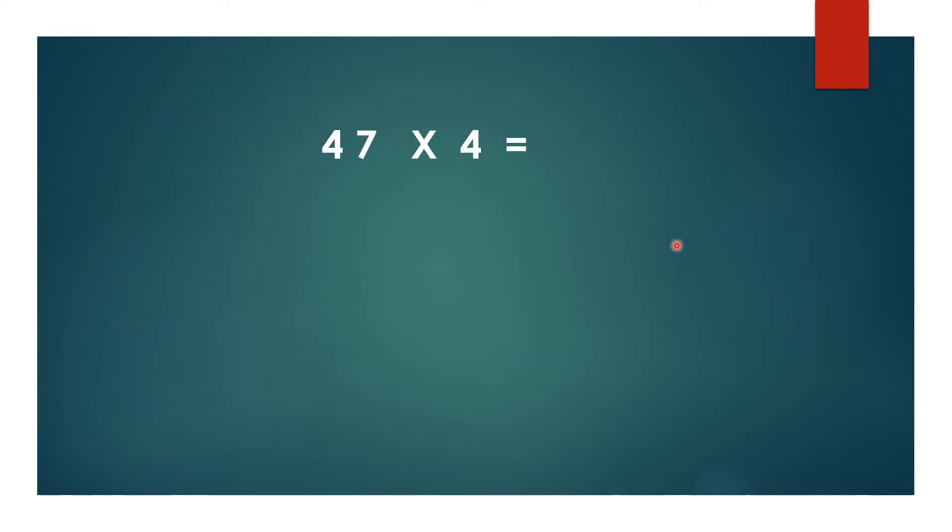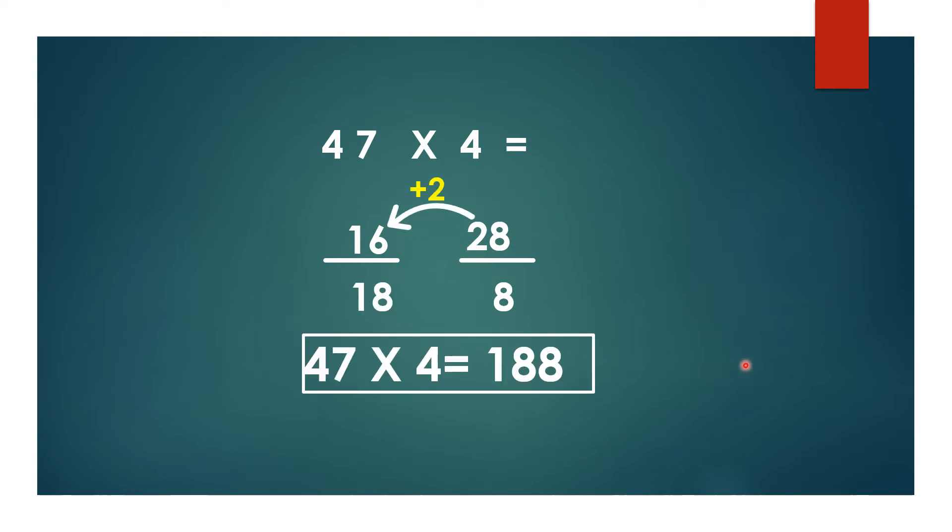Let's multiply 47 into 4. We will divide the answer into two parts. Normal multiplication: 4 × 7 = 28, 4 × 4 = 16. Write only the ones place here, that is 8. This 2 take as carryover. 16 plus 2 is 18, so 47 into 4 is 188.